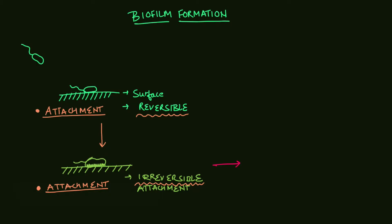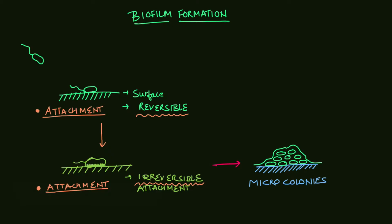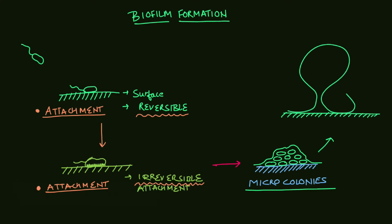Next you will have the formation of a monolayer, also known as micro colony formation. They will then develop into macro colonies — so both micro and macro colony formation occur — where cells divide and constitute colonies on that solid surface.